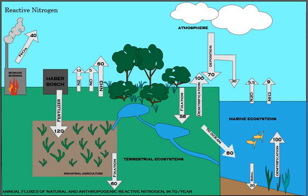Denitrification is the reduction of nitrates back into nitrogen gas (N2), completing the nitrogen cycle. This process is performed by bacterial species such as Pseudomonas and Paracoccus under anaerobic conditions. They use the nitrate as an electron acceptor in the place of oxygen during respiration. These facultatively anaerobic bacteria can also live in aerobic conditions. Denitrification happens in anaerobic conditions, e.g., waterlogged soils. The denitrifying bacteria use nitrates in the soil to carry out respiration and consequently produce nitrogen gas, which is inert and unavailable to plants.